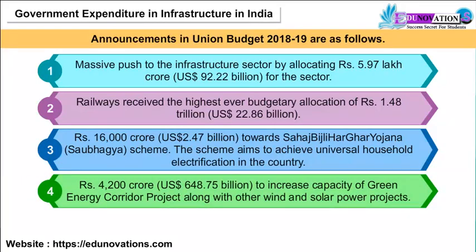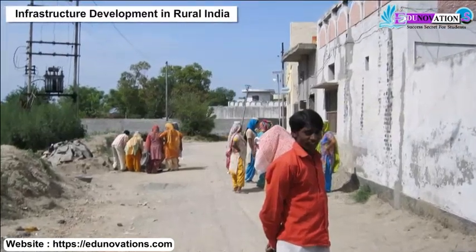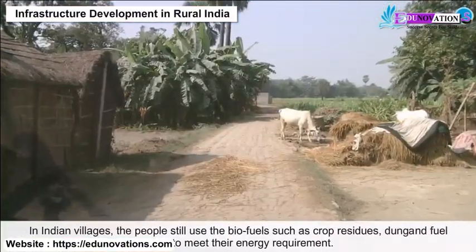Additionally, Rs. 4,200 crores were allocated to increase capacity of the Green Energy Corridor project along with other wind and solar power projects. Rs. 10,000 crores were allocated to boost telecom infrastructure.